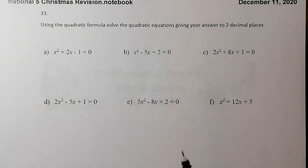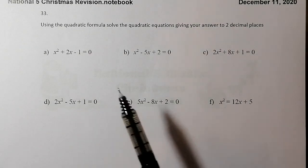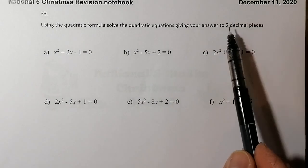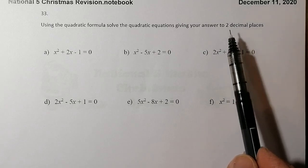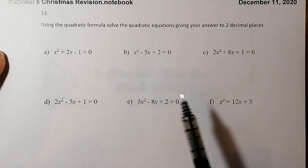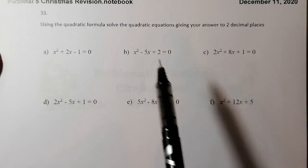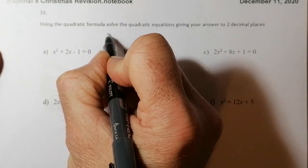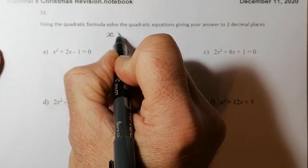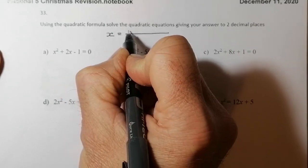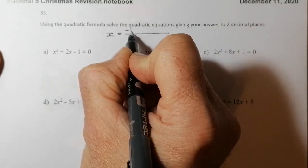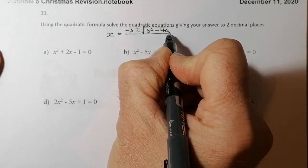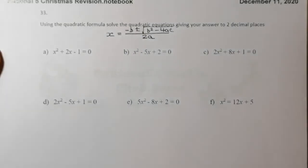This is National 5 Revision, and what we're looking at is the use of the quadratic formula to solve quadratic equations. We're going to try to answer to two decimal places, so that's going to be key. Remember that the quadratic formula is in your formula list. x is equal to negative b plus or minus the square root of b squared minus 4ac, all divided by 2a.